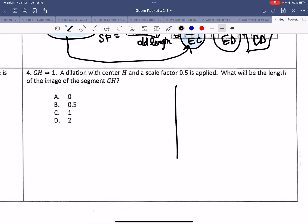G, H. I don't know where G is and H is. But it's one length long. A dilation with the center of H and a scale factor of 0.5 is applied. What will be the length of the image of segment GH? All right. So we shrunk it half as long, right? So there's our new segment. And we did it from H. How long would it be? Well, if it's half as long, it's 1 times 0.5, which would be 0.5.